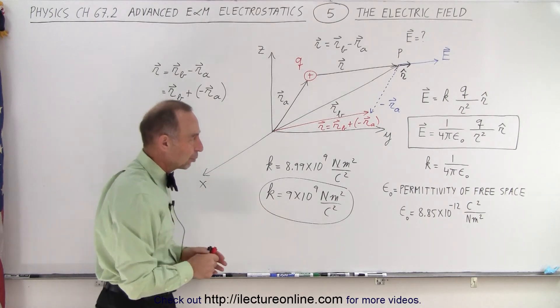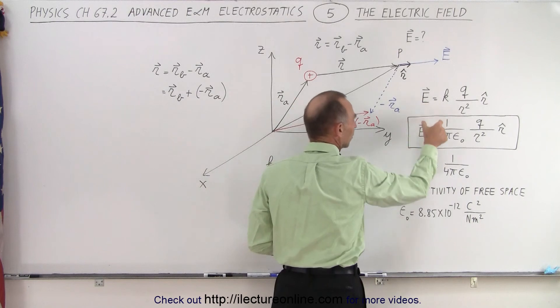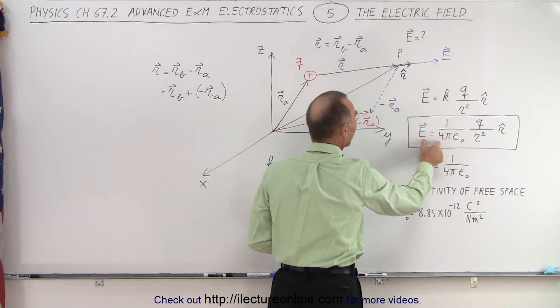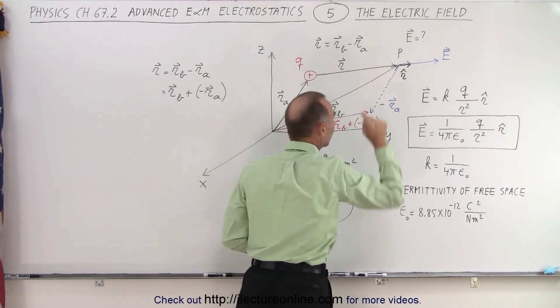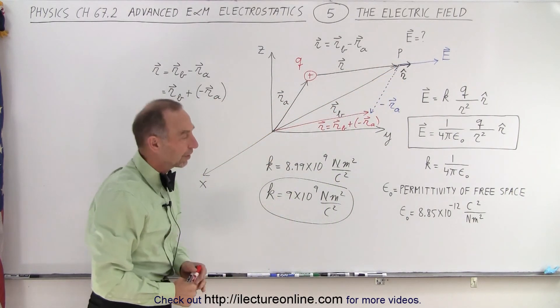Whichever method you use, this is the way you want to represent electric field in vector format, where r is simply the distance from the charge to the point in space where you want to find the electric field.